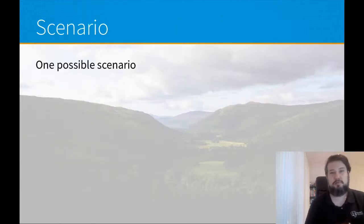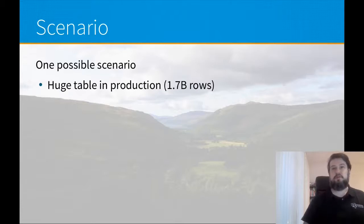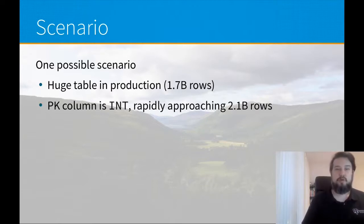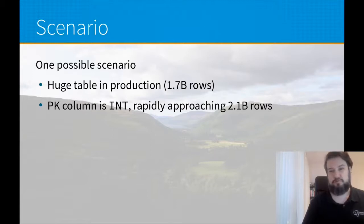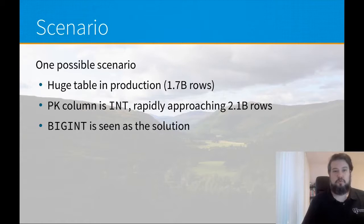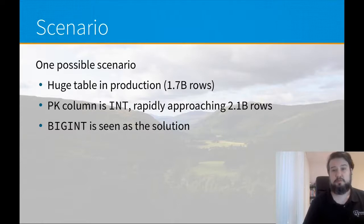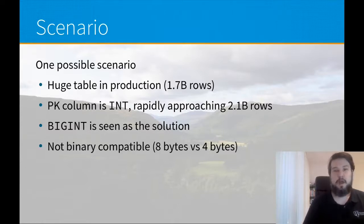So let us look at one possible scenario you may encounter. Let's say that you have a huge table in production that is 1.7 billion rows, and you have a primary key which is integer. Because of rapid growth, your table that is now 1.7 billion rows can become 2.1 billion rows very soon. So you find that bigint, which doesn't have the 2.1 billion limit but is much larger, can be the solution for your problem. However, integer and bigint are not binary compatible, because bigint is 8 bytes and integer is 4 bytes, so you have to rewrite the table.